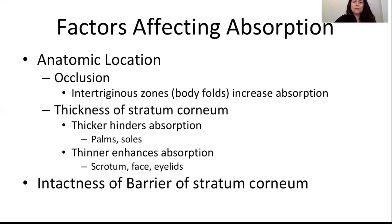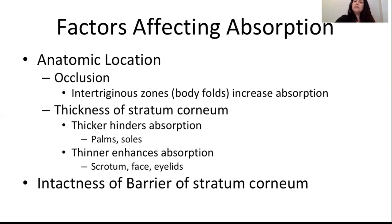Factors that affect absorption include anatomic location — intertriginous zones or body folds can increase absorption. We also have to look at the thickness of the stratum corneum, which varies by body part. Palms and soles can have very thick stratum corneum, whereas eyelids and genital skin can have very thin stratum corneum. The more layers of barrier, the less absorption there is. The intactness of the barrier also matters: if it's disrupted, as in eczema, it allows easier and increased absorption of medications.